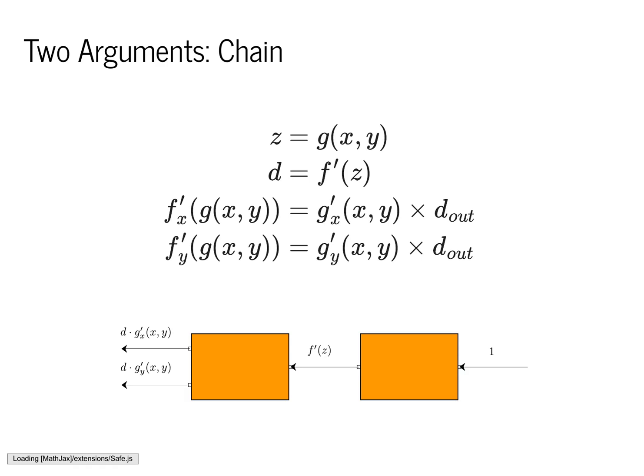That d value comes from computing f' of z. This is computationally very beneficial — we only need to compute the box on the right one time to get d, and that d value can then be passed back into the first box to get the two derivatives of interest. This is particularly nice if there are 100 boxes in a row: we simply run through all of them to compute d, and only the final box needs to split into two parts. It's worth contrasting this with numerical differentiation, which required adding and subtracting epsilon from each input argument to approximate derivatives.